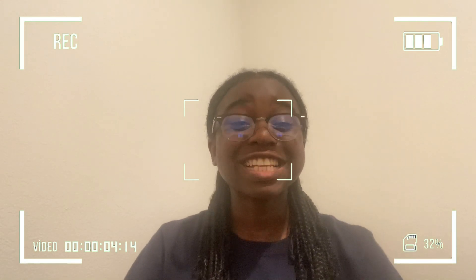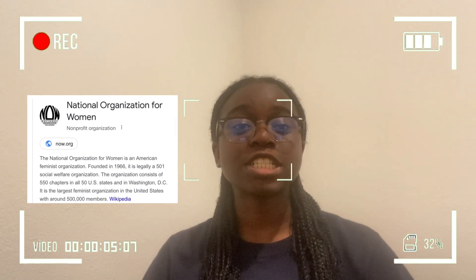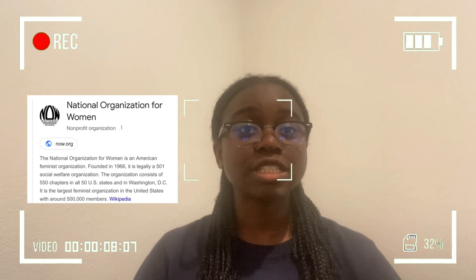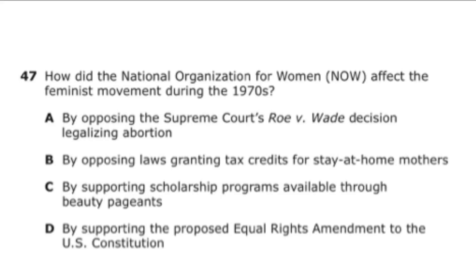Next topic: NOW, the National Organization for Women. NOW supports equal rights amendments and equality for women. It is also the largest non-profit organization in appreciation of women and their rights, and brings attention to the issues of feminism. The question asks: how did NOW affect the feminism movement during the 1970s? The correct answer is D — by supporting the proposed equal rights amendments to the U.S. Constitution. NOW helps support equal rights and equal beliefs for females.